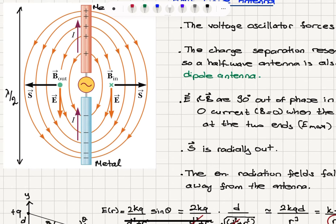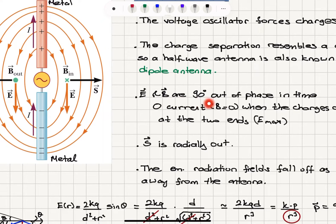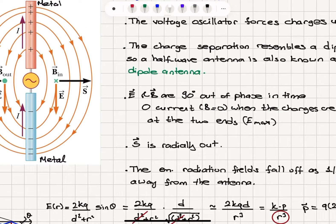Looking at the electric field and magnetic field components created by this charge distribution, because of the plus and minus charges, you can see electric field lines flowing this way. And because of the current, we have a magnetic field using the right-hand rule — if you point your thumb in the direction of current, your fingers will curl into the page on the right side and out of the page on the left side. The magnetic field will be perpendicular to the electric field component.